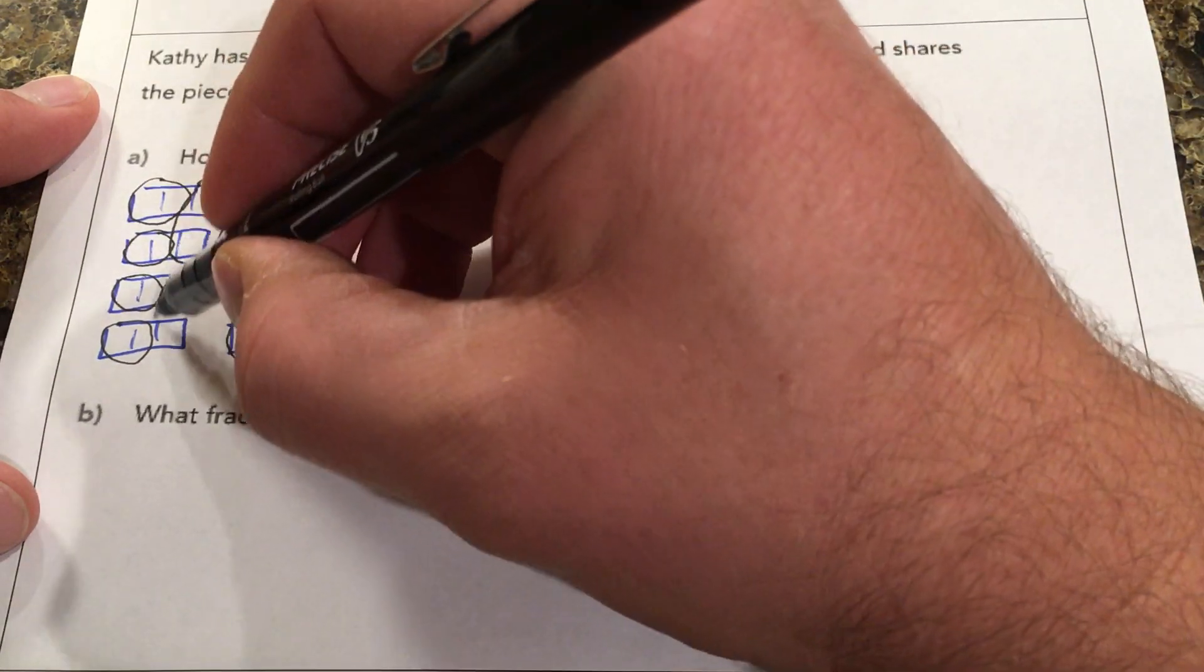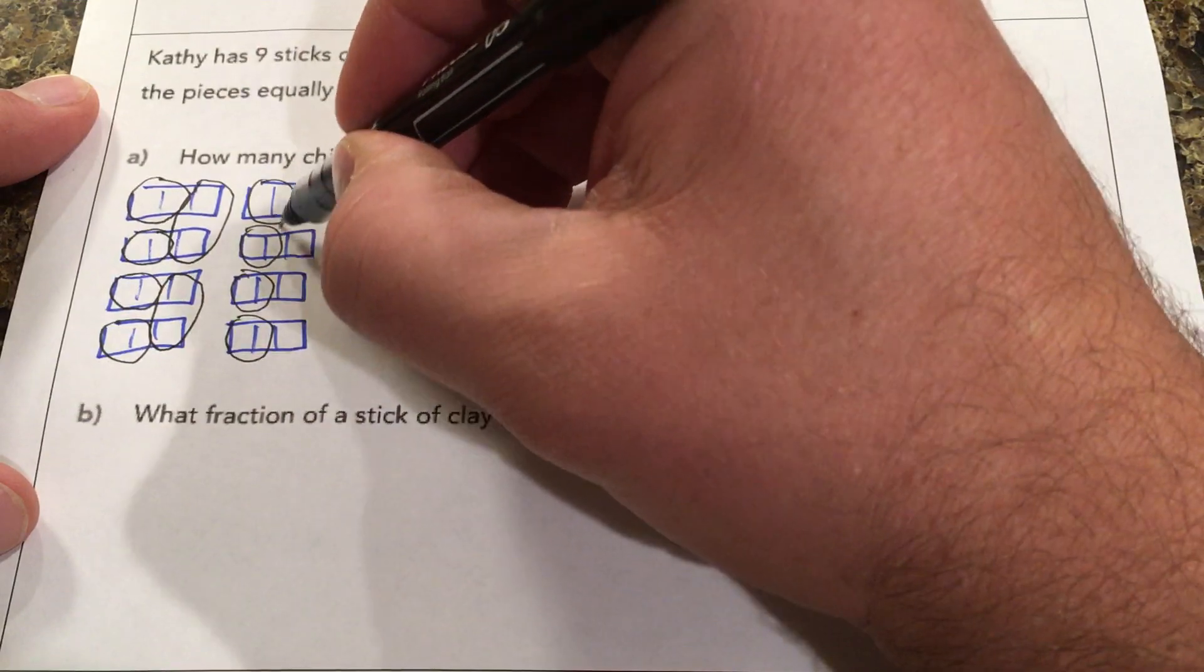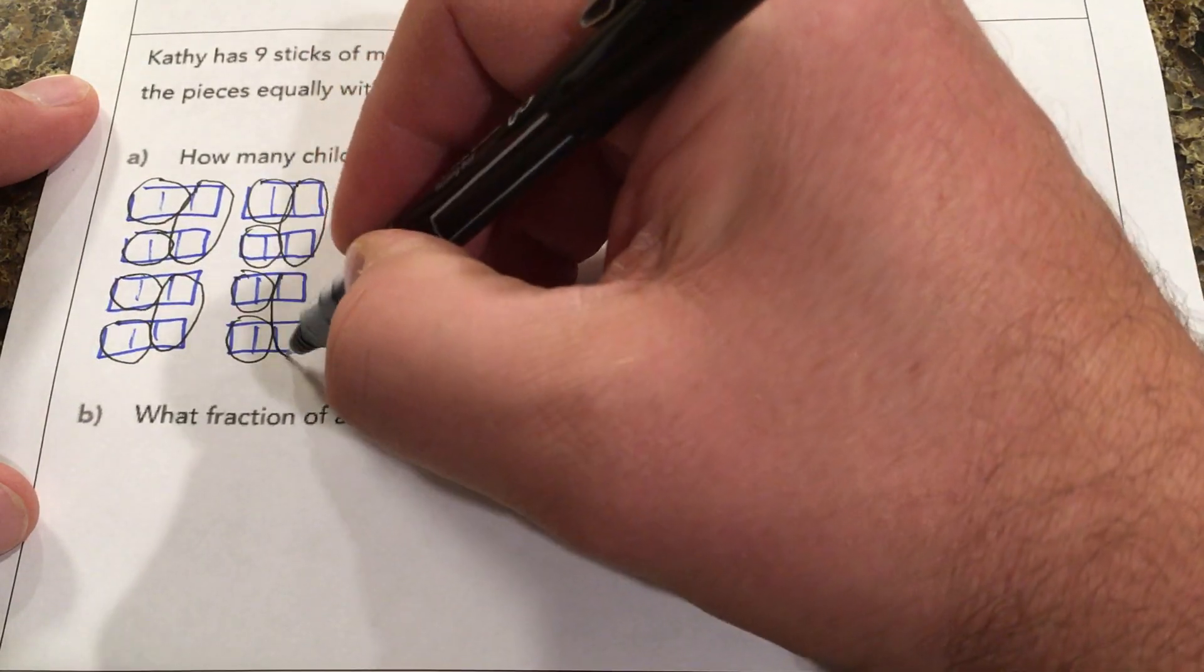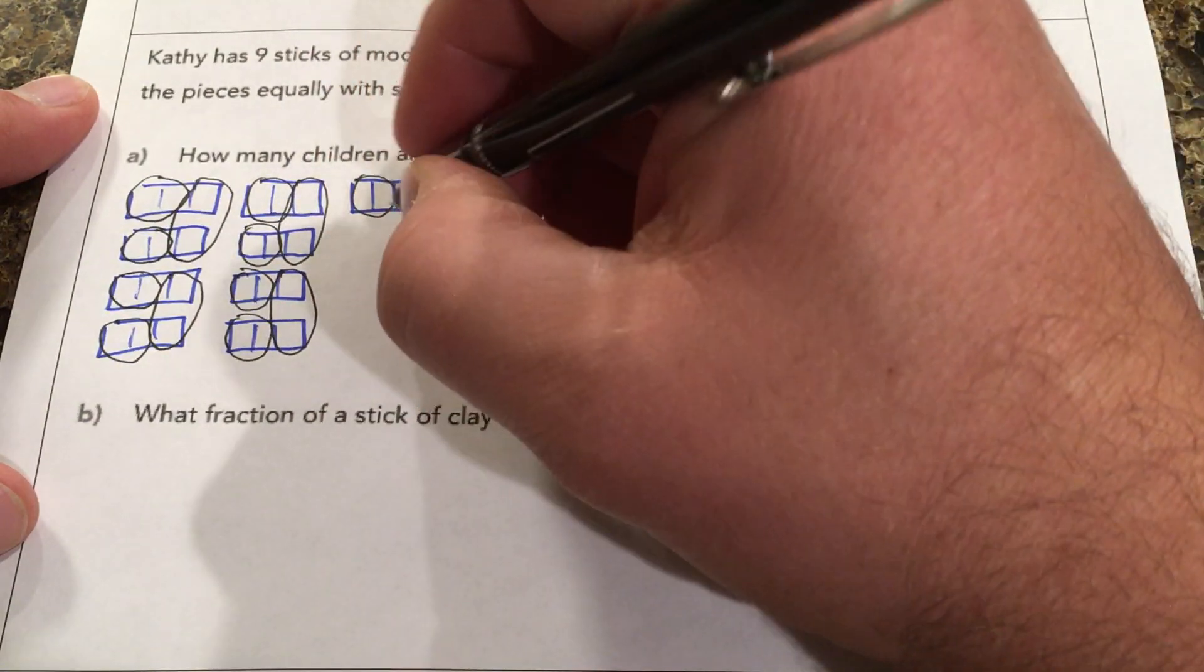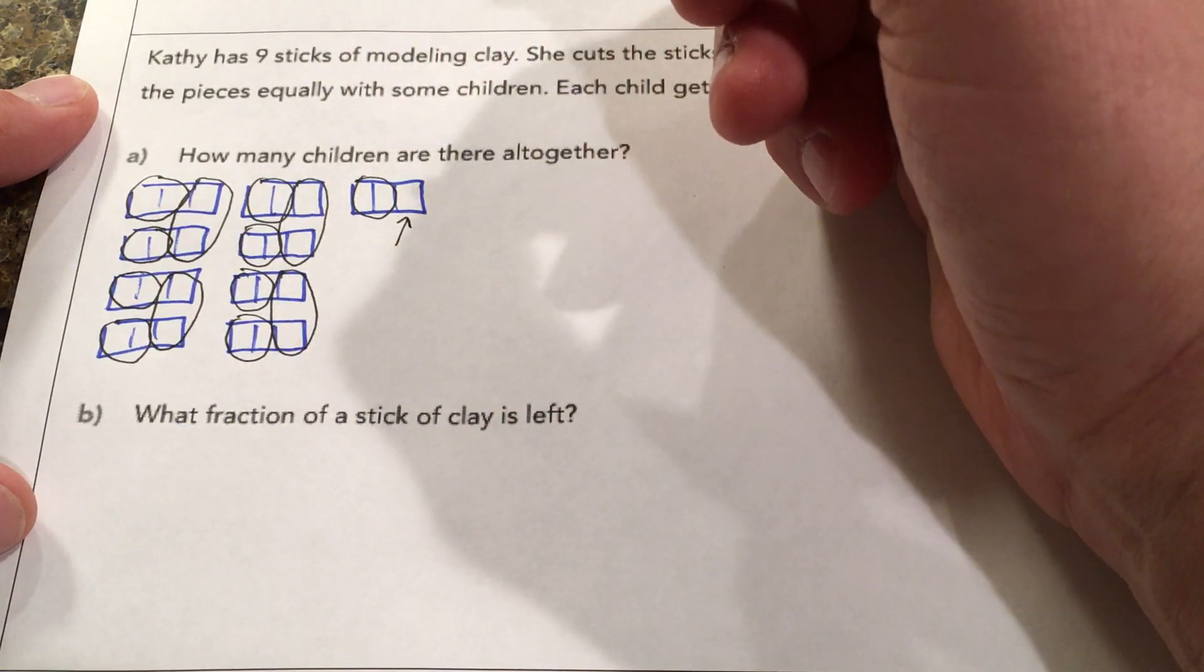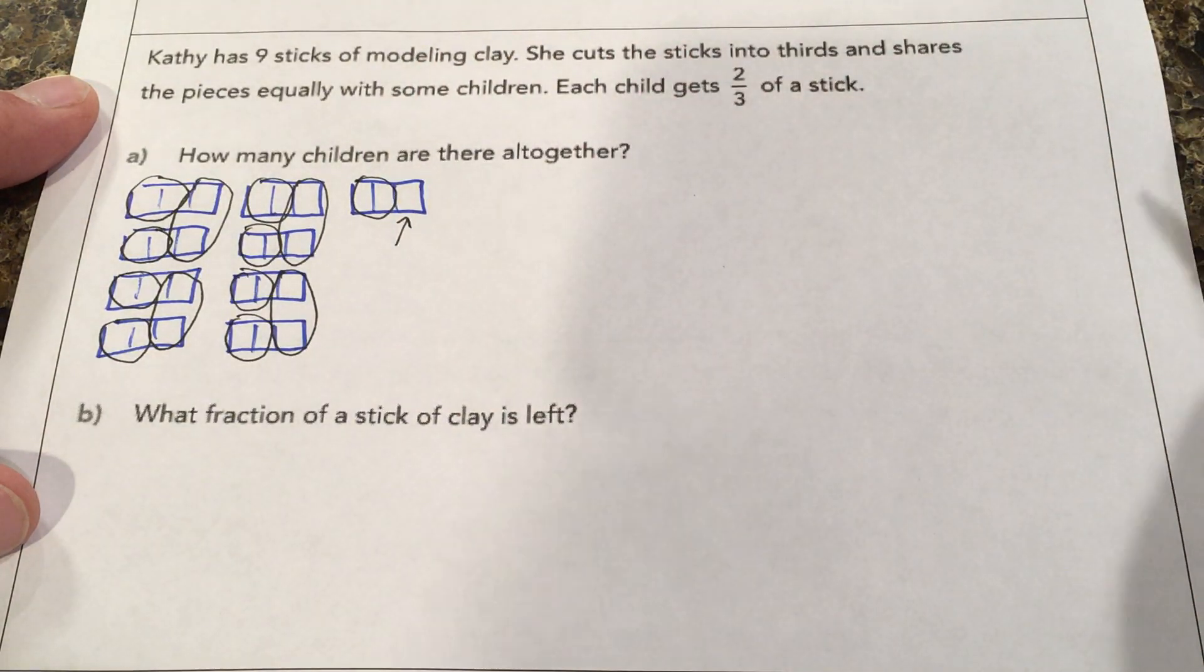So 10, 11, 12, 13, and then we have some leftover. So we see that there are 13 children.